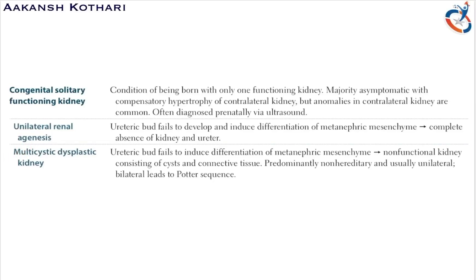Unilateral renal agenesis occurs when there is aberrant interaction between the ureteric bud and the metanephric mesenchyme, leading to complete absence of the kidney and ureter on one side. That means one kidney and its ureter are absent.